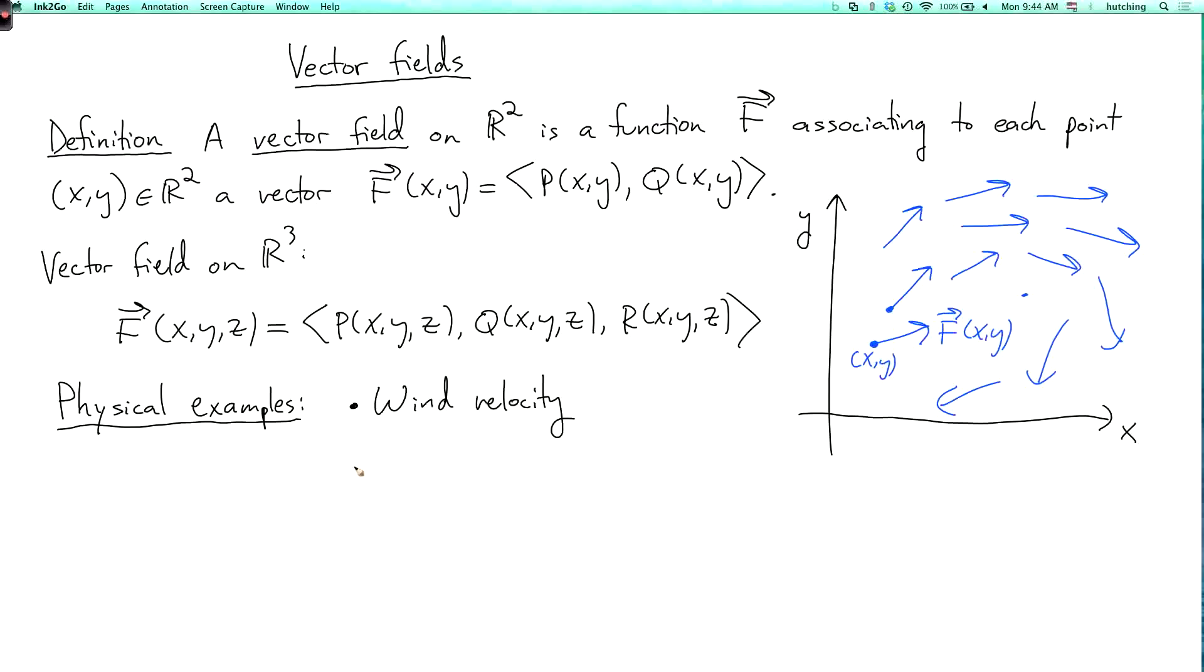Vector fields also arise as force fields. For example, the gravitational field. So this points in the direction in which gravity is pulling you. And the longer the vector, the stronger the force of gravity. So like if the earth is over here, then at the surface of the earth, gravitational field is pulling down towards the earth. If you go further away, it's also pointing towards the earth, but not as strongly. Because the further away you are, the weaker the force is.